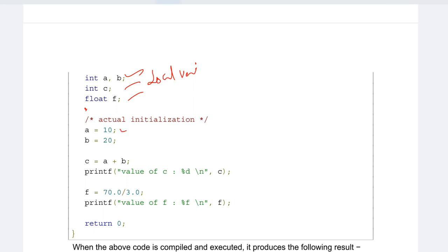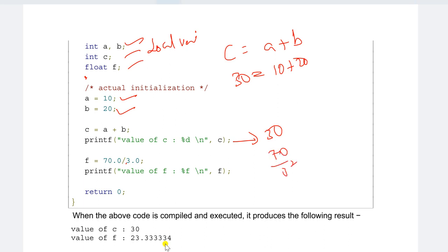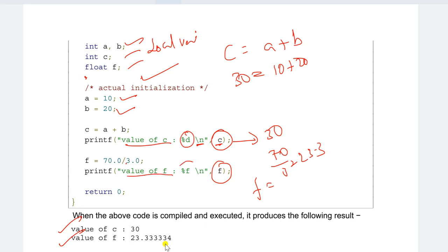In the initialization example: a equals 10, b equals 20, so c equals a plus b which is 30. F equals 70 divided by 3, which gives 23.33. If you compile this program, it prints the value of C as 30 and the value of F as 23.33. The printf uses %d for integer and %f for floating point, with newline characters.